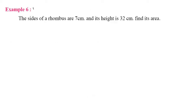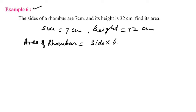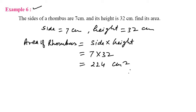Now let us see Example 6. The side of a rhombus is 7 cm and its height is 32 cm. So side = 7 cm. Area of rhombus = side × height = 7 × 32. That gives 224 cm².